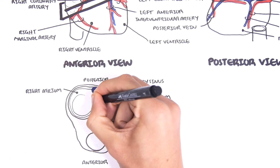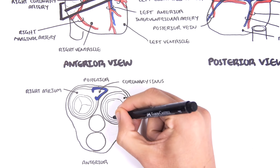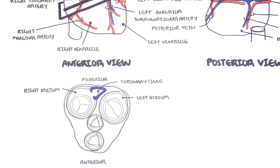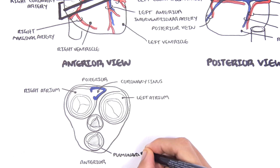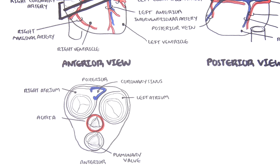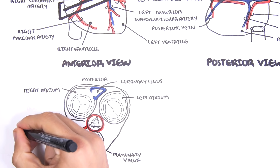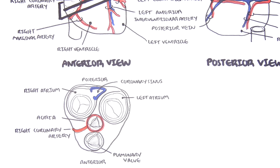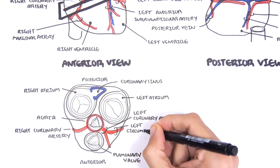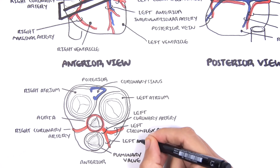Your right and left atria have the valves. In the right atrium you have your tricuspid valve; in your left you have your mitral valve. In front of these you have your other valves — the pulmonary valve and the aortic valve. After the aortic valve, at the ascending aorta, you have the two branches of the coronary arteries: the right coronary artery coming off the right side, and the left coronary artery which further divides into the left circumflex artery and the left anterior interventricular artery.